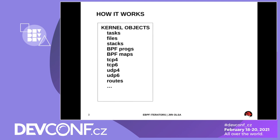I have a diagram that shows what I just said. There are several objects supported for iteration through the eBPF iterator: tasks, files, tags of the tasks, BPF programs, BPF maps, and many networking objects.